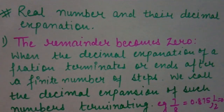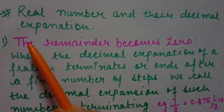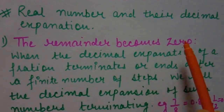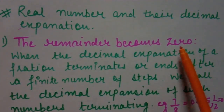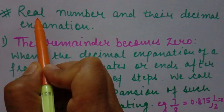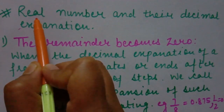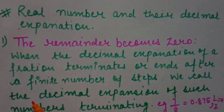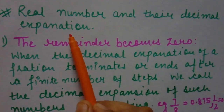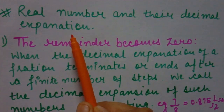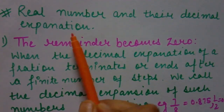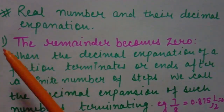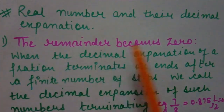Decimal expansions are basically of two types. First type: when the remainder becomes zero. A real number is the collection of all rational plus irrational numbers. The decimal expansion of a rational number — we will go with the division process.